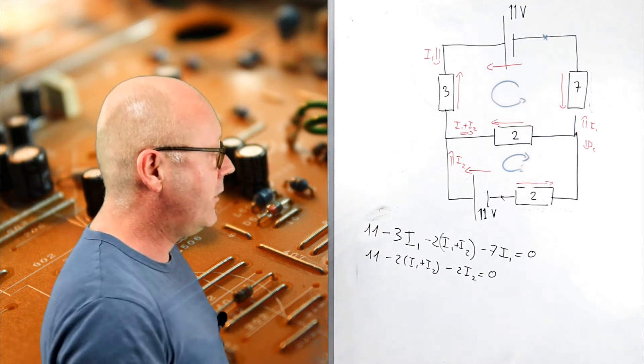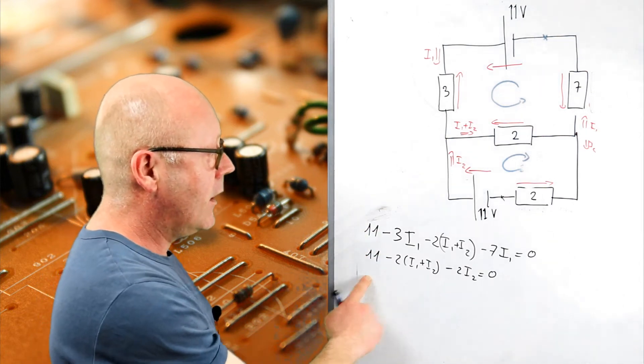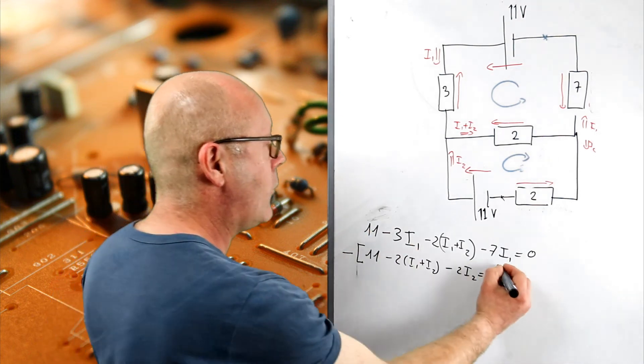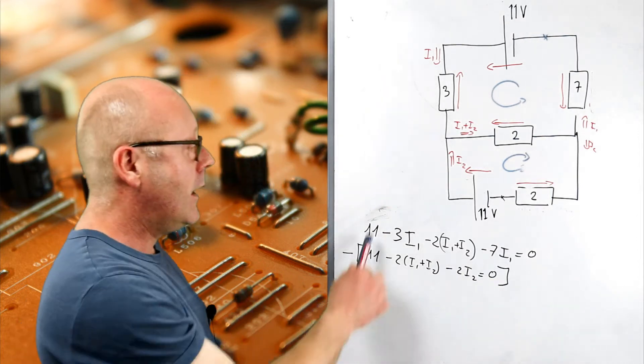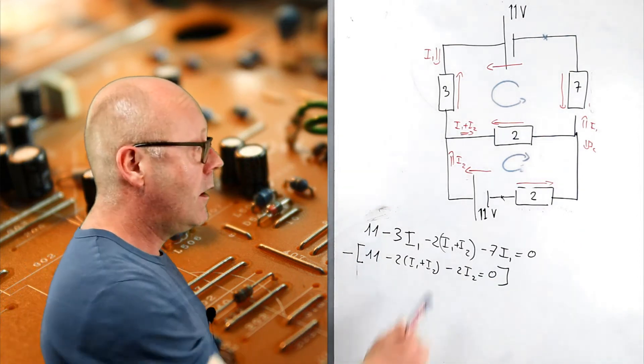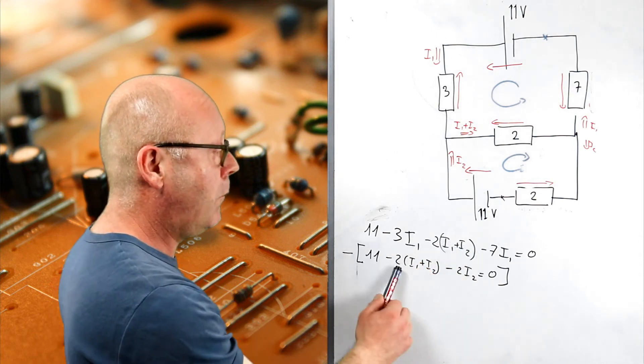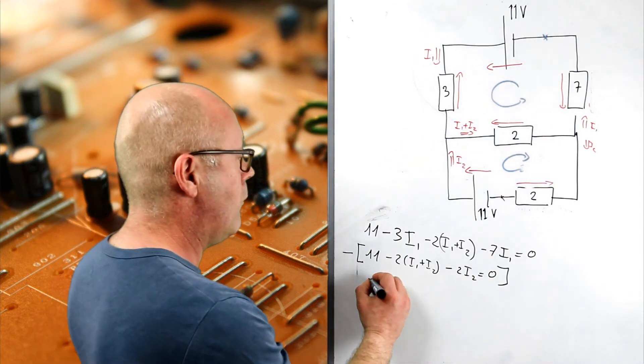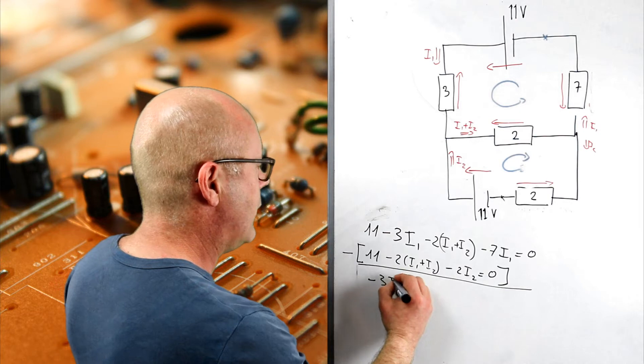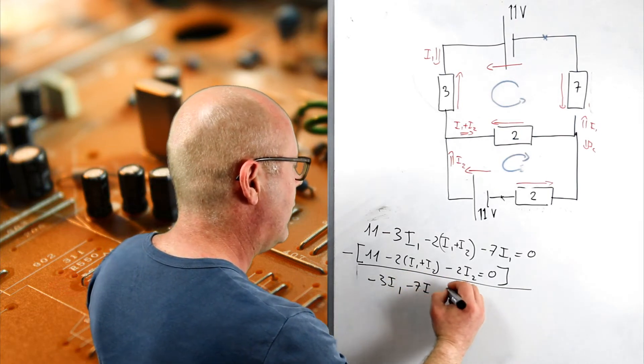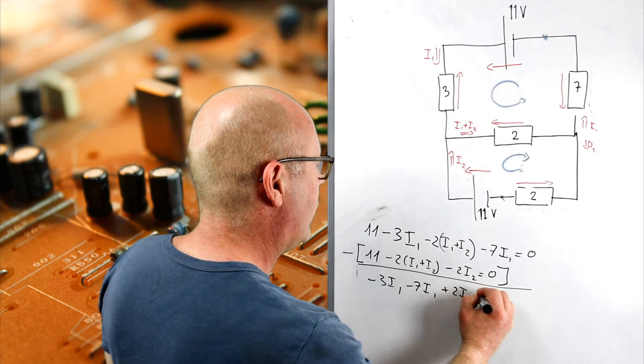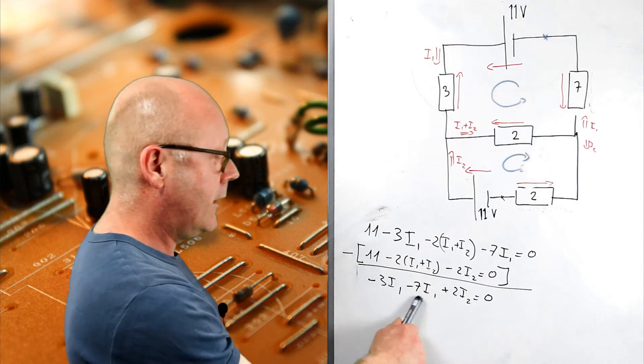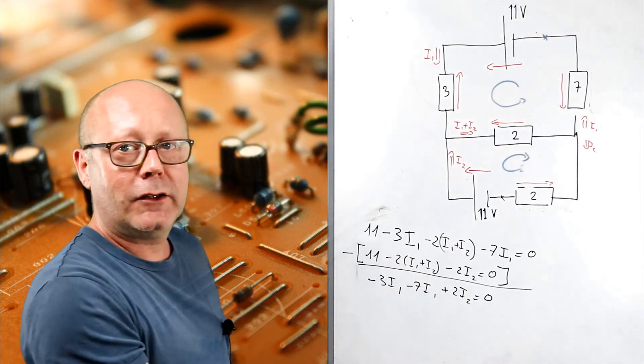What I'm going to do, I notice something interesting here. I notice that I've got this parameter in common and this one. So, I'm just going to subtract one equation to the other. 11, minus 11, zero. Minus 2 (I1 plus I2), plus 2 (I1 plus I2), zero. That leaves me with only these three terms. So, minus 3 I1, minus 7 I1, plus 2 I2, equals zero. Now, I can add these two. I get minus 10 I1 plus 2 I2, equals zero.